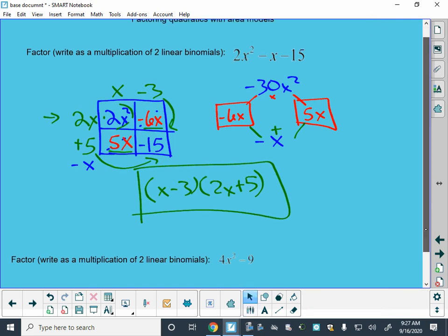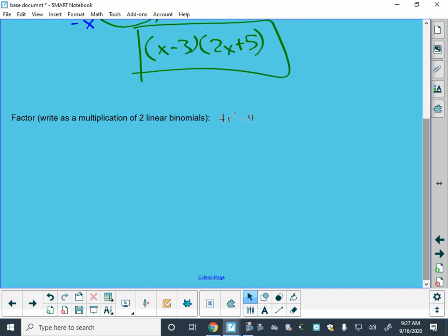Let's do another example. Got one here. What if there is no term here? This should also be prefaced by the fact that you always should look for a greatest common factor to begin with. These examples don't have a greatest common factor that I can take out. So if I want to factor 4x² - 9, same thing again.